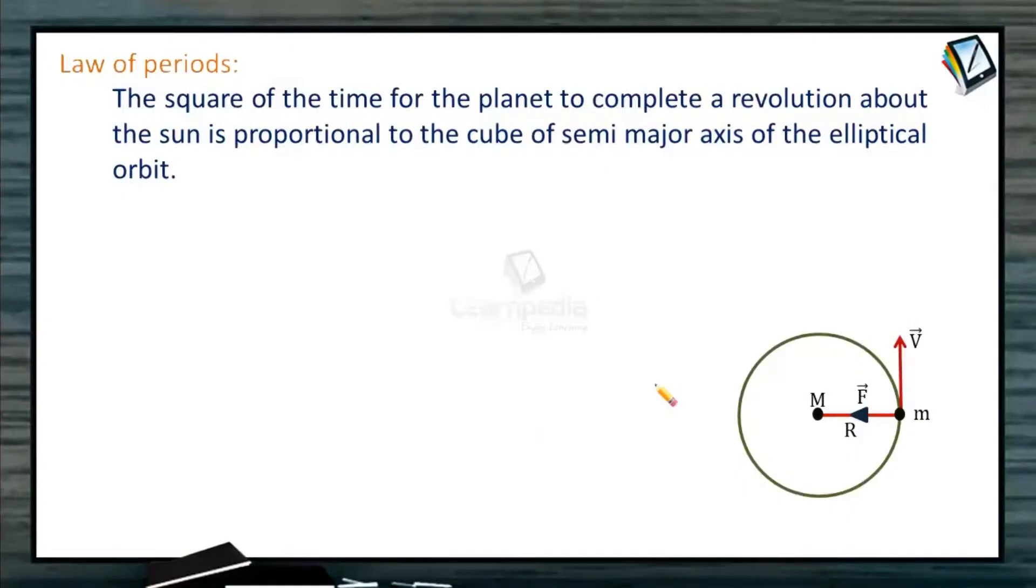So, let us discuss Kepler's third law, that is law of periods. This law states that the square of the time for the planet to complete a revolution about the Sun is proportional to the cube of the semi-major axis of the elliptical orbit.